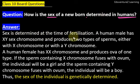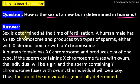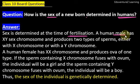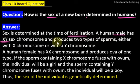Jab females mein fertilization ka process ho raha honda hai, usi vakt us honne wale bachche ka kya gender hooga, kya sex hooga — it will be a boy or a girl — wo decide ho jata hai. A human male has XY chromosomes. Humans mein jho male hootay hai, unke paas dho sex chromosomes hootay hai, that is X and Y, and produces two types of sperms — either with X chromosome or with a Y chromosome.